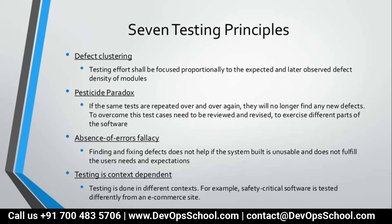Sixth principle: absence of error fallacy. If a developer or infrastructure engineer says there is no error at all in their application or infrastructure, that is not possible. Even WhatsApp and Gmail have defects. No application in the universe has zero defects.